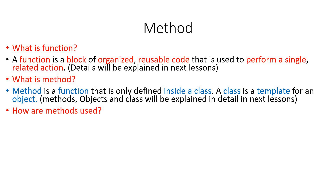The next question is: how are methods used? Methods are used with dot notation. That is, first you will type the name of the object, then a dot, then the name of the method — so object dot method.